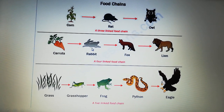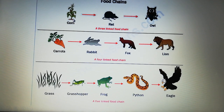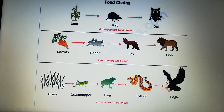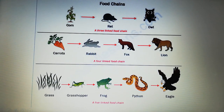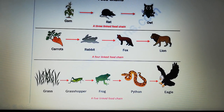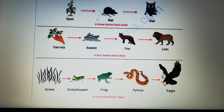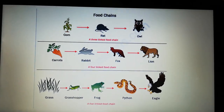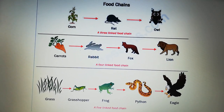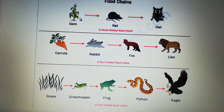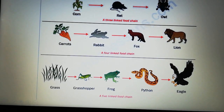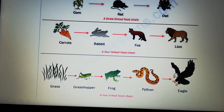If you look at the three food chains here, you can see that the food chain always starts with plants, because the plants are producers — they produce their own food. And then the next links are the consumers, which are animals. These animals can be herbivores, carnivores, or omnivores. For example, the rat eats the corn, so it's a herbivore. The frog eats the grasshopper, so it is a carnivore.